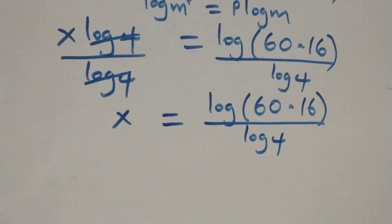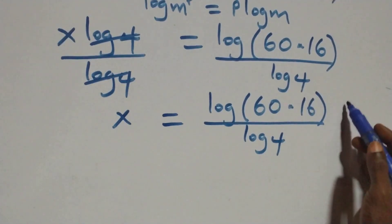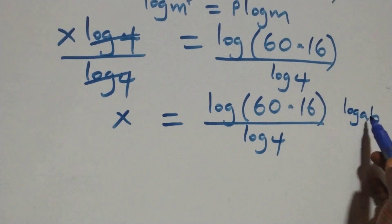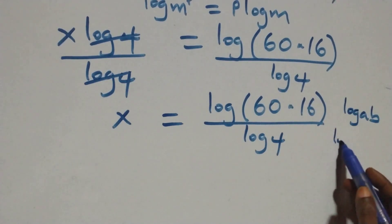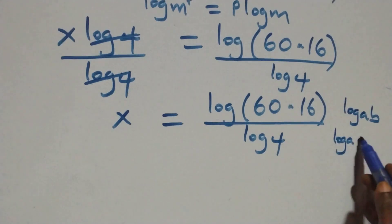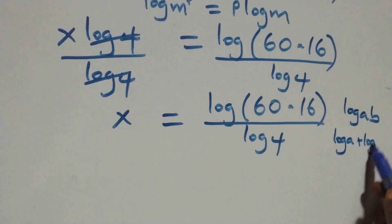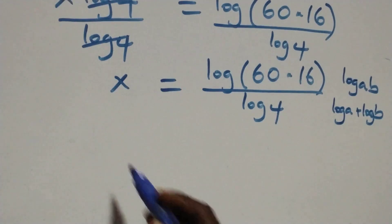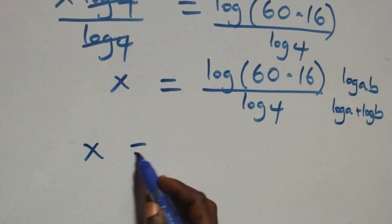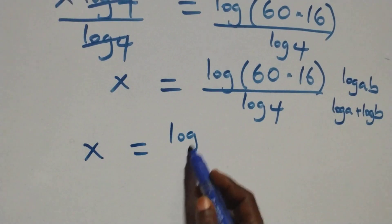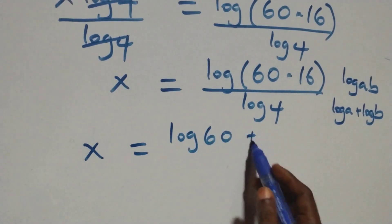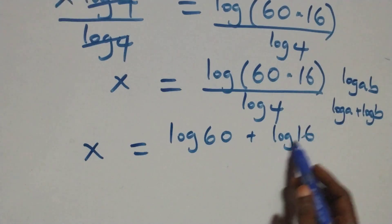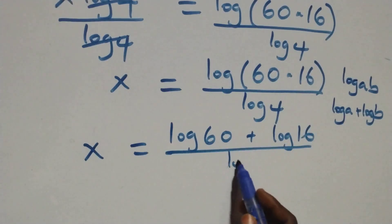The next step follows the law of logarithm: when we have log of a times b, this is the same as log a plus log b. So what we have here becomes x equals log sixty plus log sixteen, all over log four.